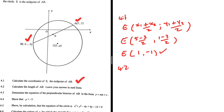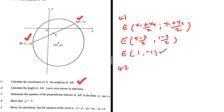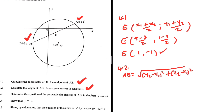In 4.2, we want to calculate the length of AB and leave our answer in surd form. So the length of AB — we have the coordinates of A and the coordinates of B, so let's use the distance formula here. AB will be given by the square root of (Y2 minus Y1) squared plus (X2 minus X1) squared.